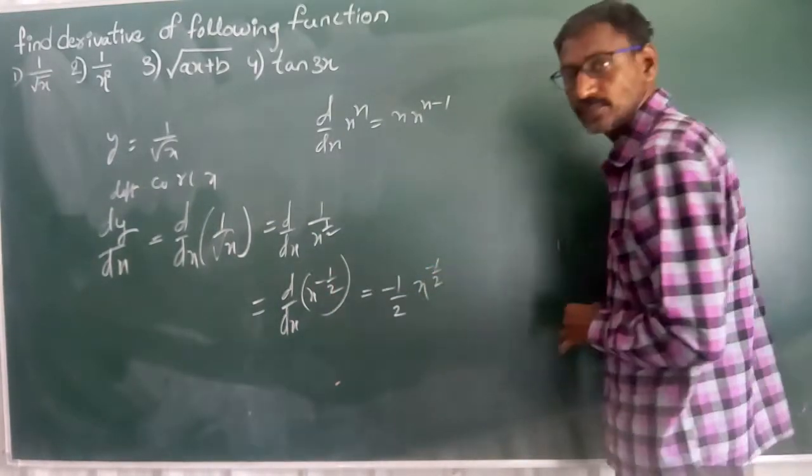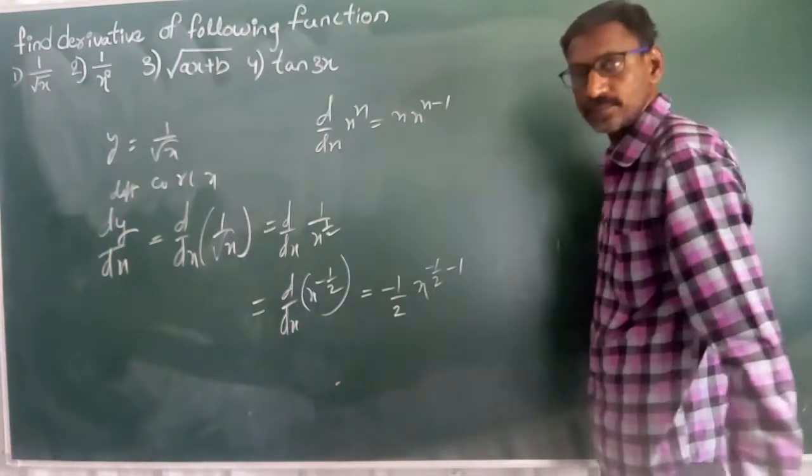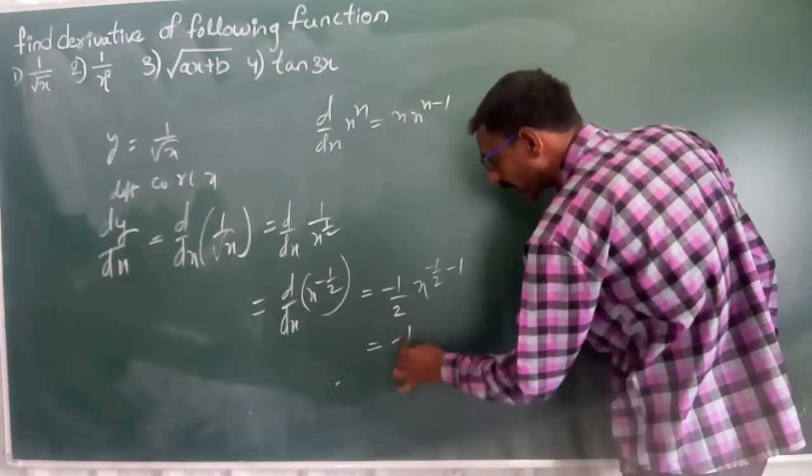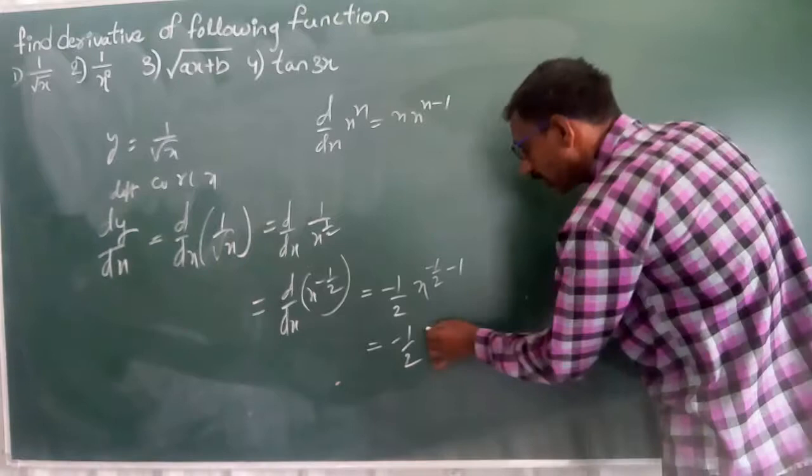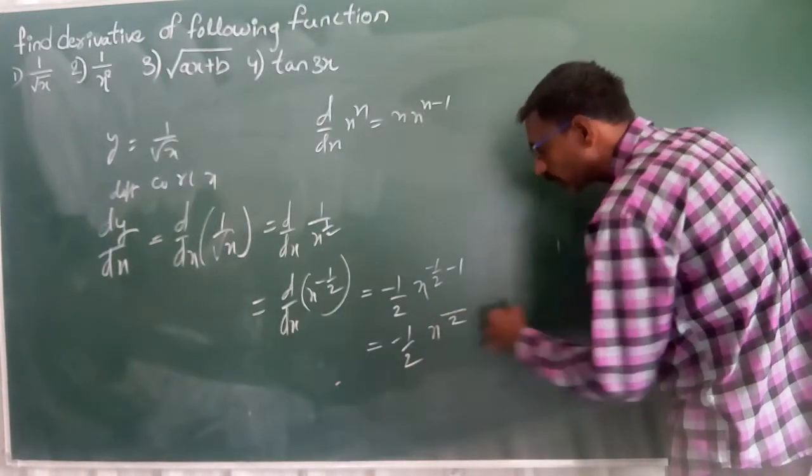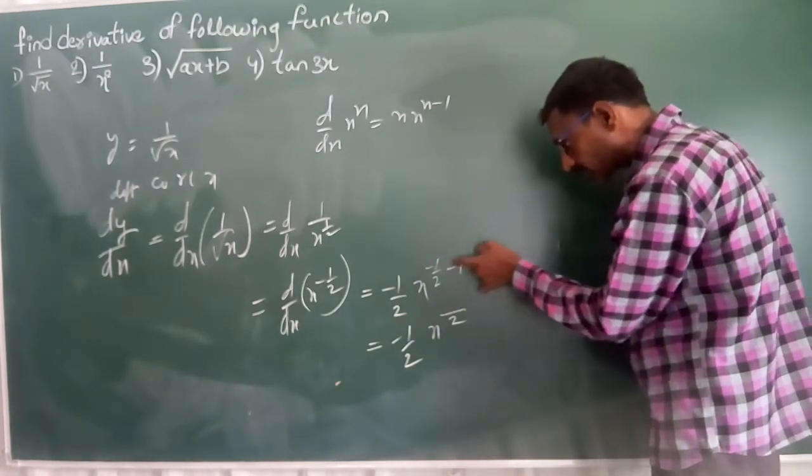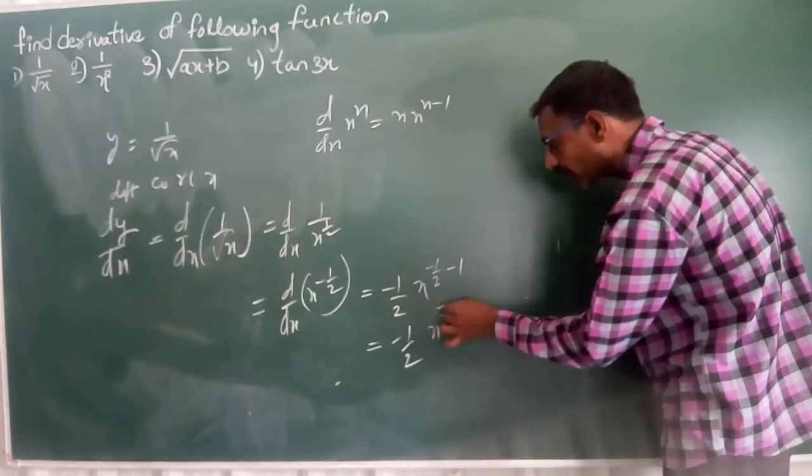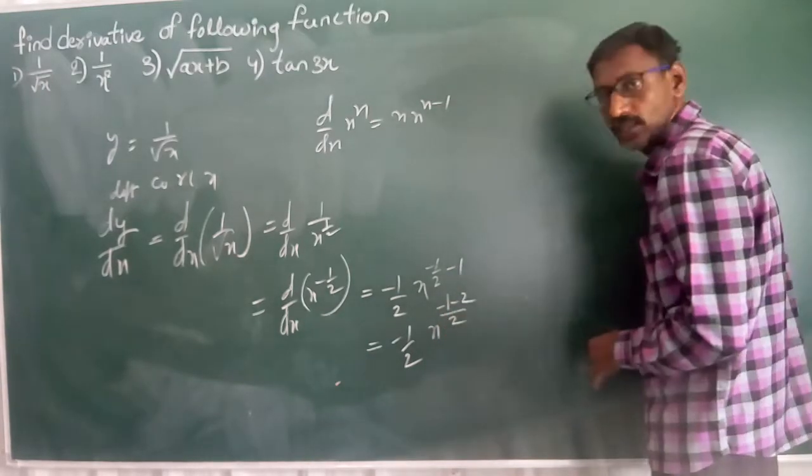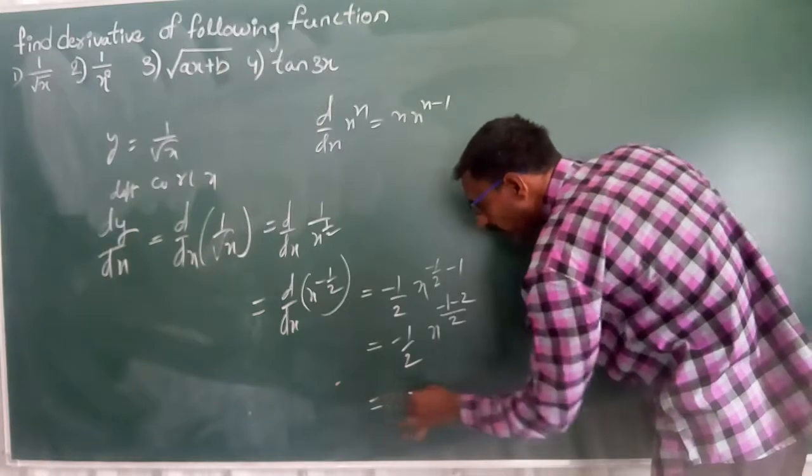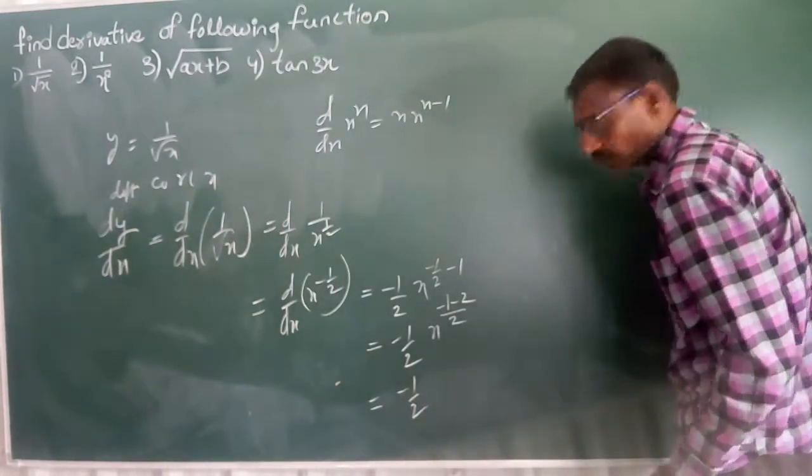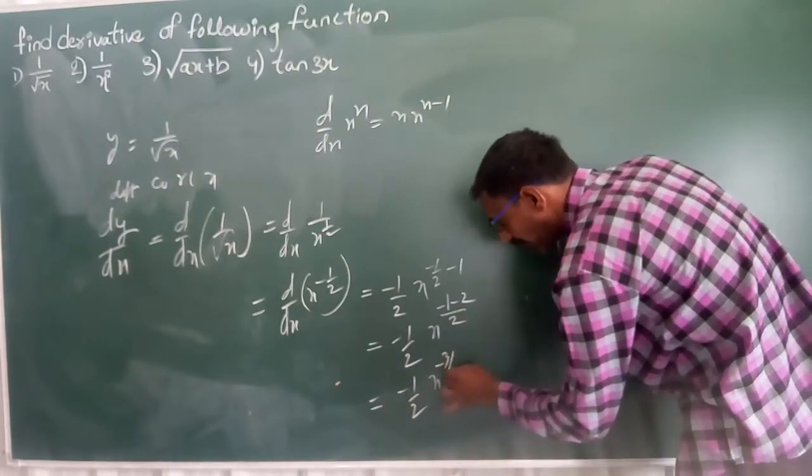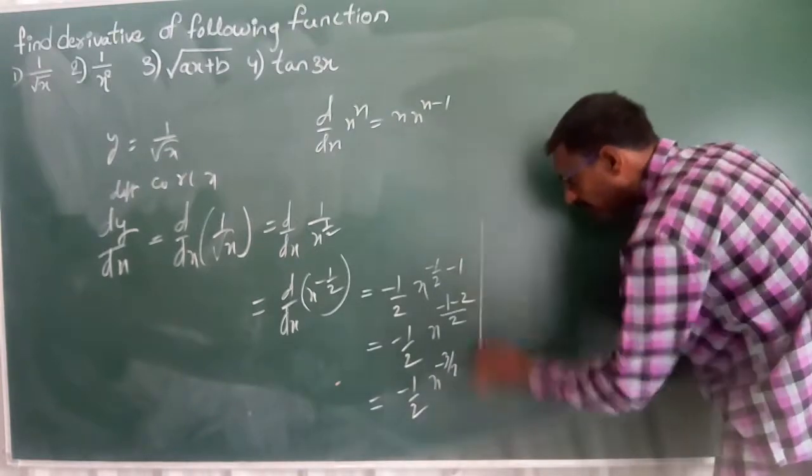So this is minus 1 by 2 into x power, taking LCM, that is minus 1 minus 2. Minus 1 minus 2, isn't it? This is nothing but minus 1 by 2 into x power minus 3 by 2.